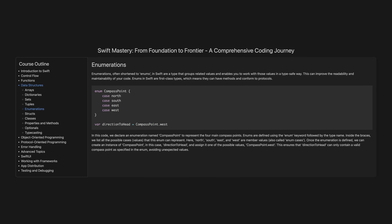Enumerations. Enumerations, often shortened to enums, in Swift are a type that groups related values and enables you to work with those values in a type-safe way. This can improve the readability and maintainability of your code. Enums in Swift are first-class types, which means they can have methods and conform to protocols.